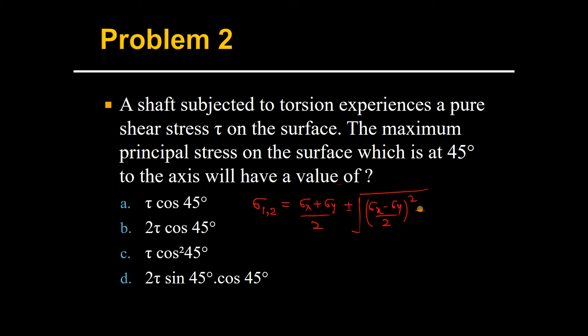Now we know that for pure shear, of course there will be no sigma x, no sigma y, and we can put this equal to 0. Hence we could write sigma 1, which is nothing but the major principal stress, as equal to plus minus root under of tau xy square, which is nothing but tau.